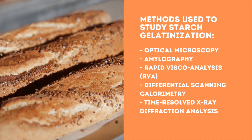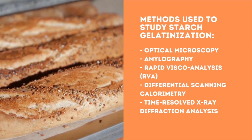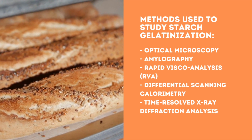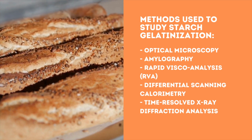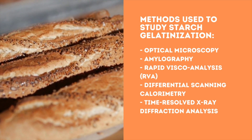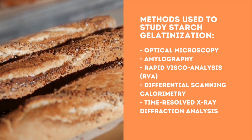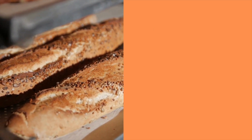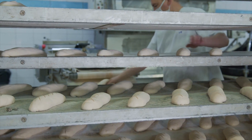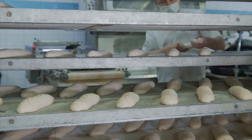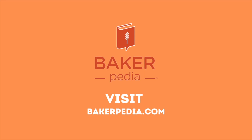These are some common methods used to study starch gelatinization: optical microscopy, amylography, rapid visco analysis (RVA), differential scanning calorimetry (DSC), and time-resolved X-ray diffraction analysis. Want to learn more about starch gelatinization and different types of starches? Visit Bakerpedia.